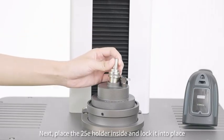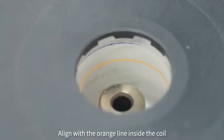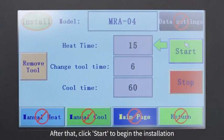Next, place the 25E holder inside and lock it into place. Pull down on the coil and according to this chart, align with the orange line inside the coil. After that, click start to begin the installation.